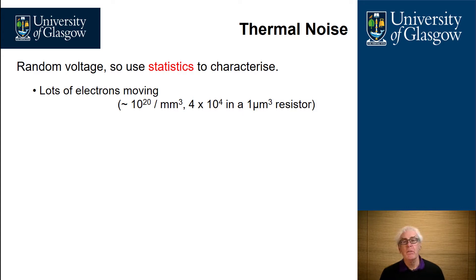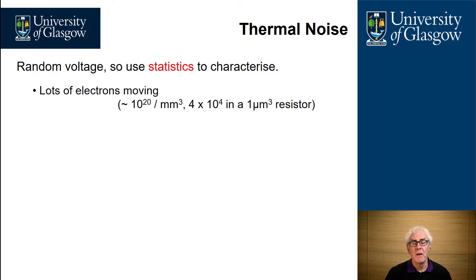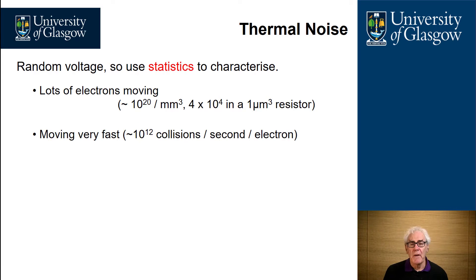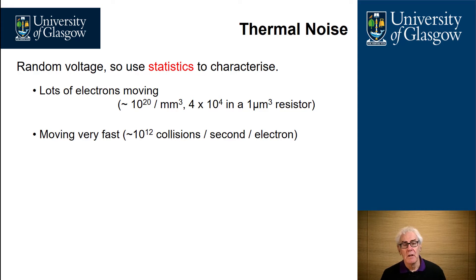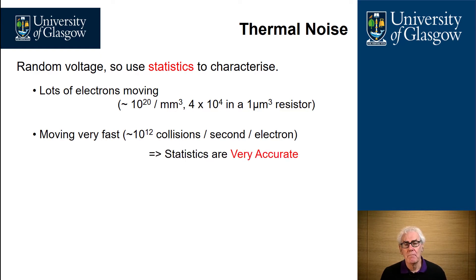In a one cubic micron resistor laid down on top of a piece of silicon, there are anything up to 40,000 electrons moving around in there — and that's a very small resistor indeed. Electrons move very fast, causing about 10 to the 12 collisions every second for every electron, so there's a huge number of statistical events happening in any one period of time.